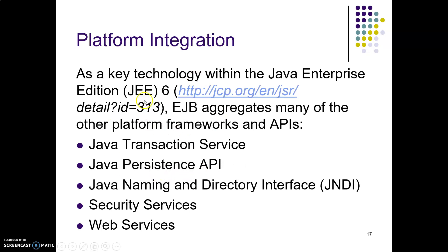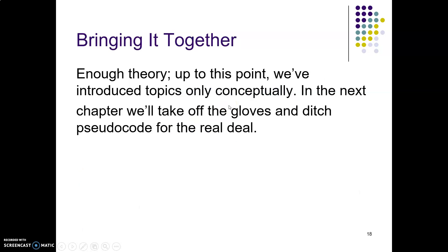The final topic is platform integration, where Java Enterprise Edition aggregates many other APIs such as the transaction service, persistence API, JNDI, security services, and web services, integrating and binding them all together. We have introduced all these topics conceptually. In the coming chapters we will get into the actual coding of EJB programming. Thank you, we will see in the next lecture.